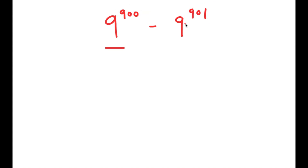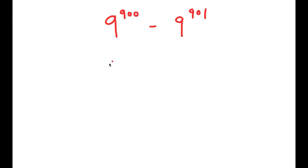The easiest way to solve this is to simplify as much as we can, and a way to do that is to factor out a term. Well, 9 to the power of 900 is actually a factor of 9 to the power of 901, so all we have to do is rewrite 9 to the power of 901 as something times 9 to the power of 900. We can use properties of exponents to do this.